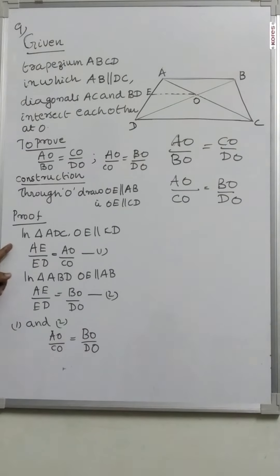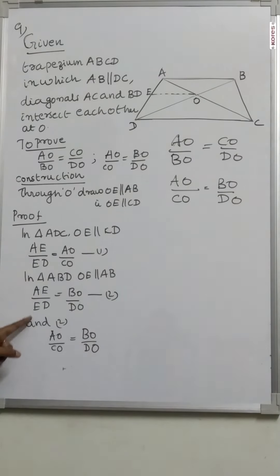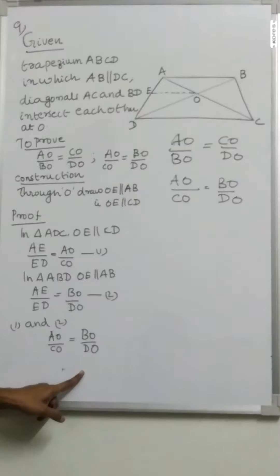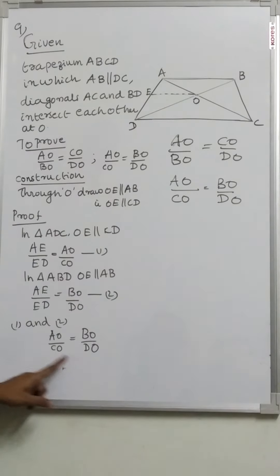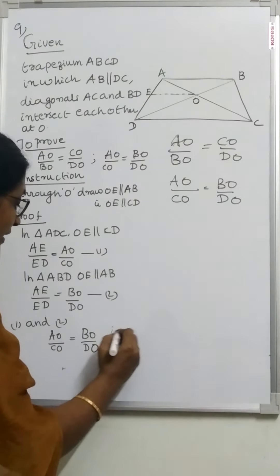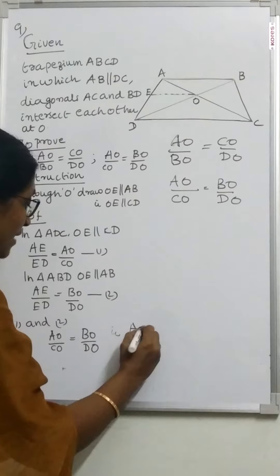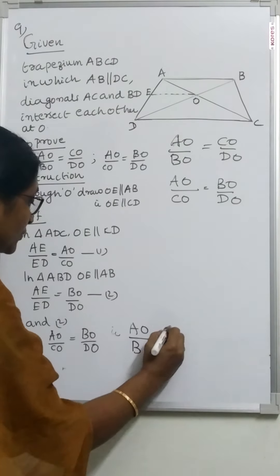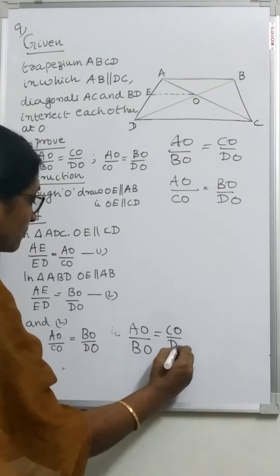From equations 1 and 2, the left-hand sides are equal (both equal AE by ED). Therefore, the right-hand sides are also equal: AO by CO is equal to BO by DO. So we can write AO by BO is equal to CO by DO.